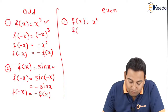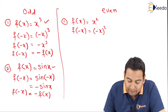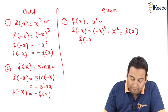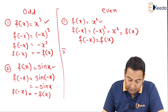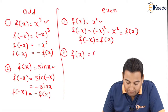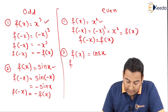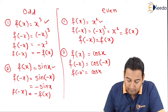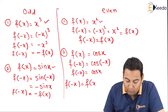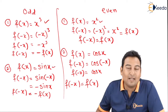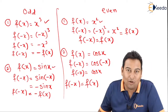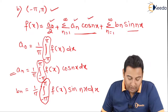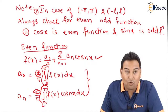Now let's check for an even function. Let's say f(x) = x². Replace x with minus x: f(−x) = (−x)² = x², which is f(x). So if f(−x) = f(x), the function is even. One more example: f(x) = cos(x). Replace x with minus x — cos(−x) = cos(x), therefore f(−x) = f(x), function is even. Friends, whenever we get limits minus π to π, always check even/odd. If neither even nor odd, use the general formula; if even use the even formula; if odd use the odd formula.